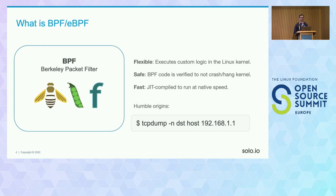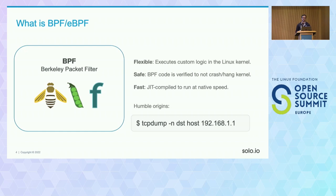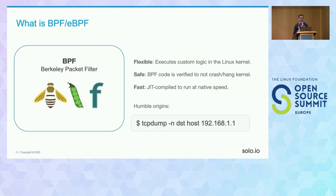Let's start with eBPF. Back in the day there was BPF — if you've used tcpdump, you may have used BPF without knowing it. eBPF is the most recent evolution of this technology. It provides a flexible, safe, and fast way to inject custom logic into your kernel. Flexible because you don't need to recompile your kernel. Safe because there's a verifier so only verified BPF code can run. Fast because it's JIT-compiled at native speed.